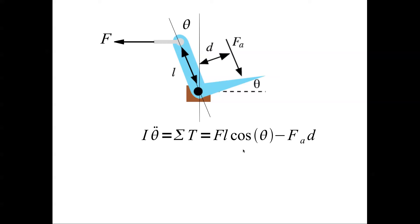Now we write an expression for F. F equal to I theta double dot plus Fa times d divided by l cos theta.